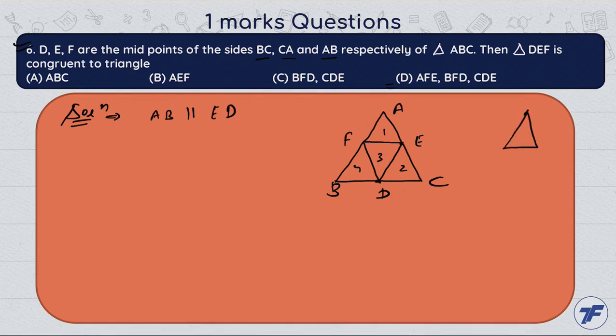So, if we have a triangle, when we have midpoints, then we have the third side which is parallel. Similar type, we have FD parallel.